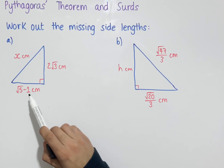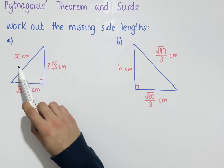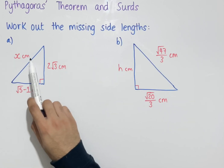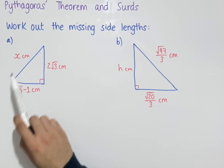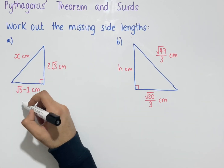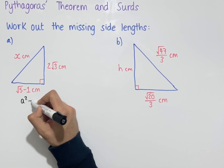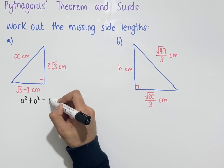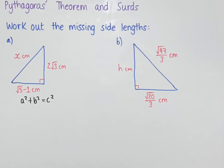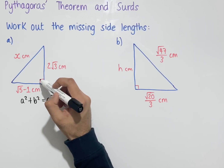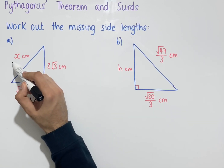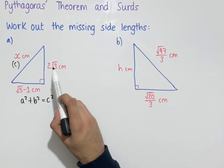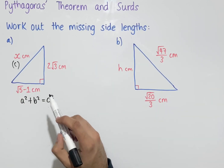Since we have two side lengths and a missing side length, we can use Pythagoras' theorem to work out this missing side length x. Pythagoras' theorem states that a² + b² = c² in a right-angle triangle, where c is the side opposite the right angle — the hypotenuse — which here is x. The other two side lengths we can label however we like.